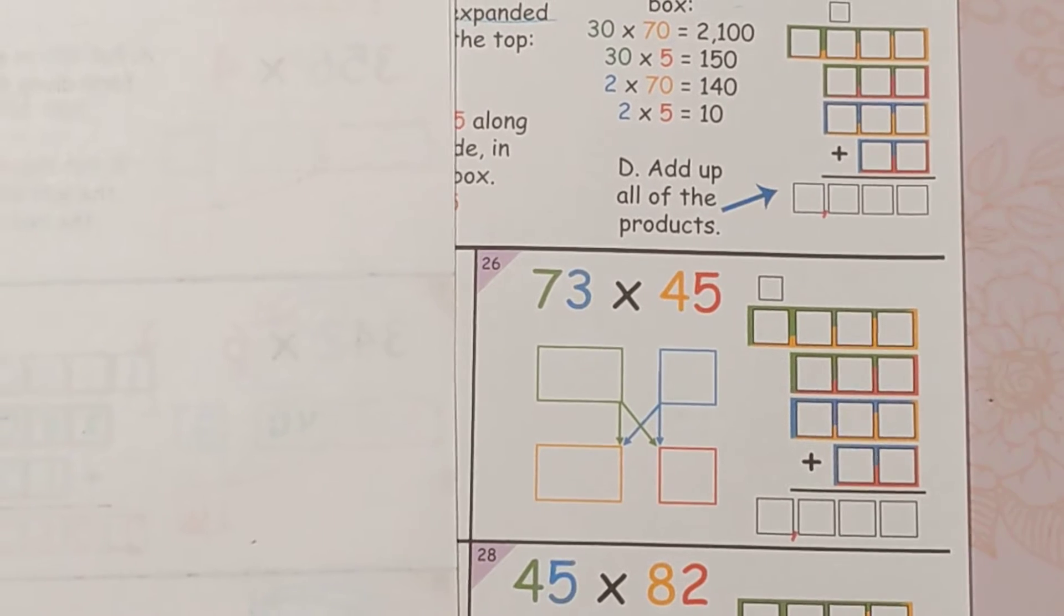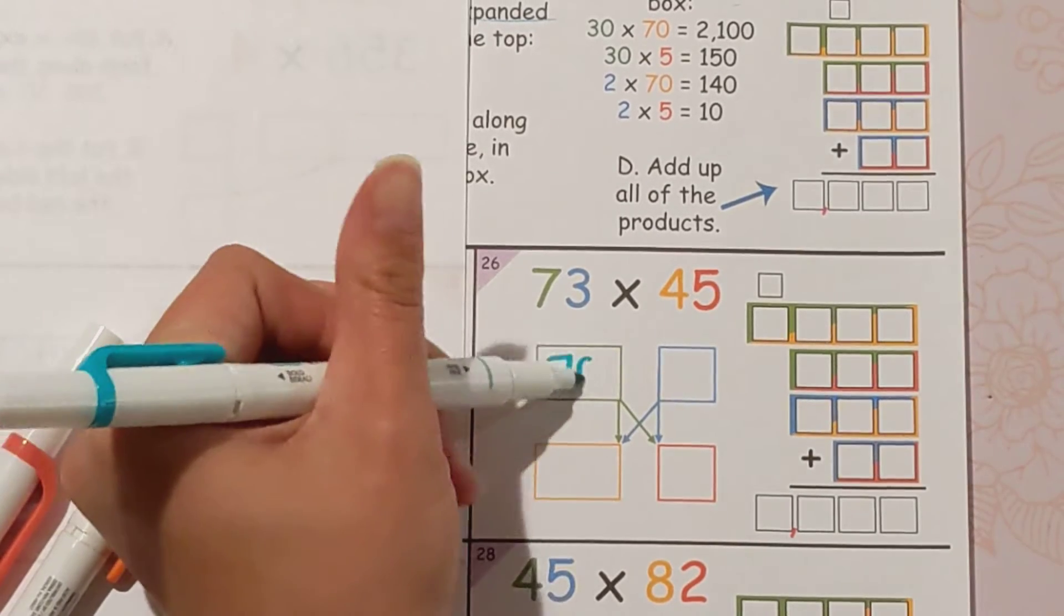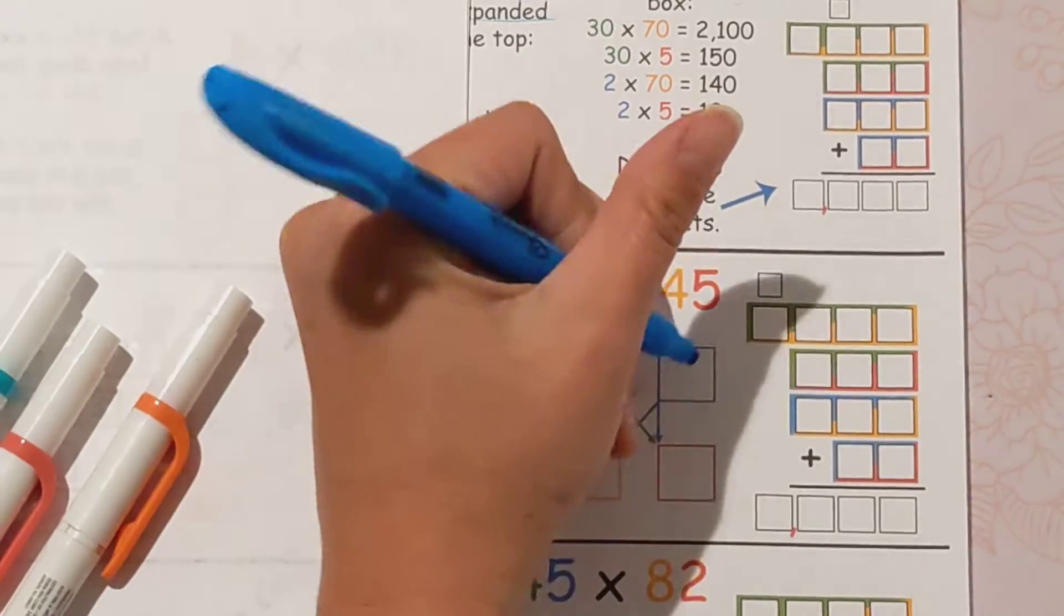The first step is to separate each number into its parts, so 73 is really 70 plus 3, and then 45 is 40 plus 5.